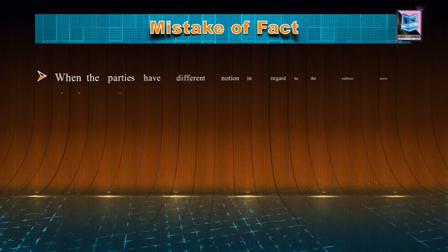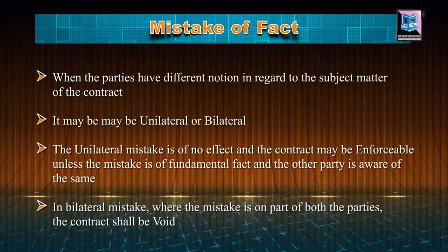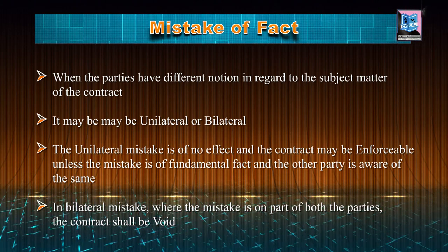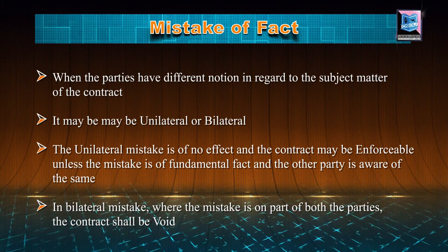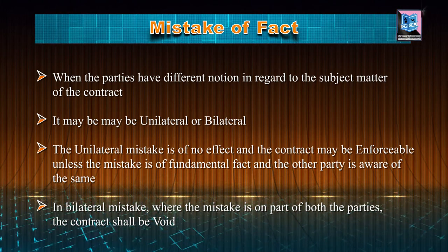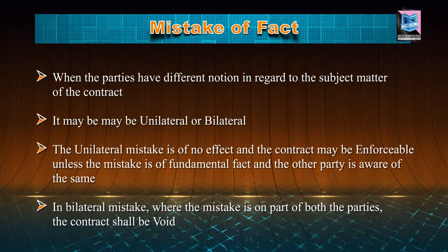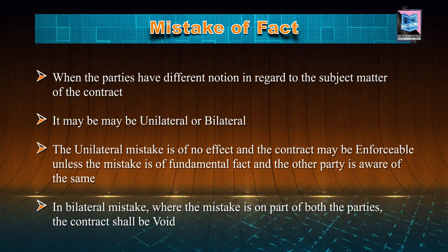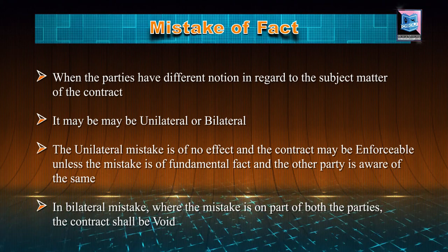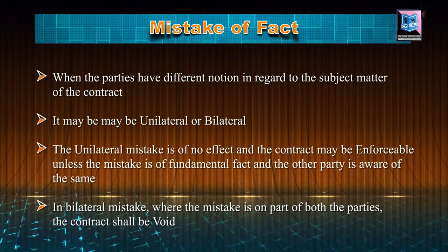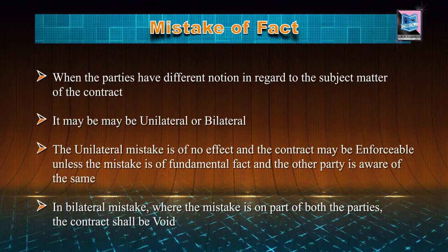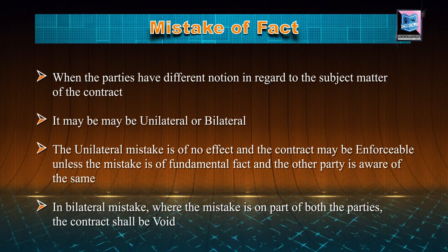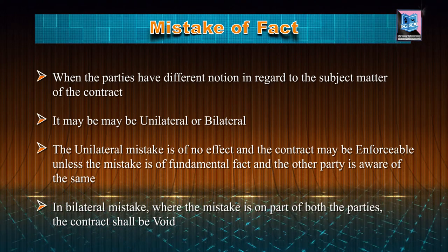Coming to the mistake of fact: the mistake of fact is when the parties have different notions in regard to the subject matter of the contract. The mistake may be either unilateral or bilateral. In case of unilateral mistake — mistake on the part of one party — the unilateral mistake is of no effect and the contract may be enforceable unless the mistake is of fundamental effect and the other party is aware of the same. Proceeding to bilateral mistake: where the mistake is on the part of both parties, the contract shall be void.